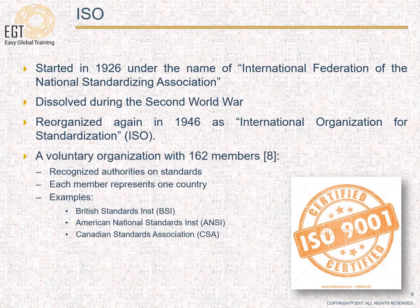ISO is a voluntary organization with 162 members. Each member is a recognized authority on standards and each member represents one country. For example, British Standards Institute or BSI, American National Standards Institute or ANSI, and Canadian Standards Association or CSA are members representing the UK, US, and Canada.